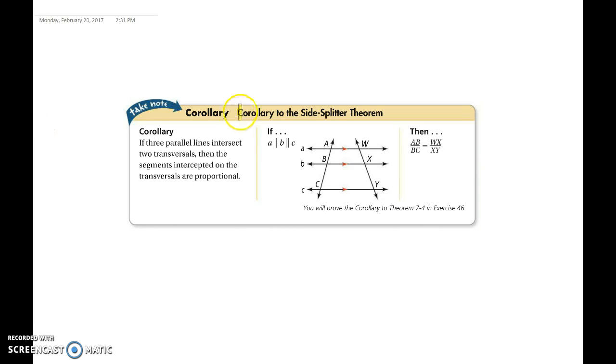So here it is, the corollary to the side splitter theorem. If three parallel lines intersect two transversals, then the segments intercepted on the transversals are proportional, meaning that we will create proportions that are equal to each other or ratios that are equal to each other.